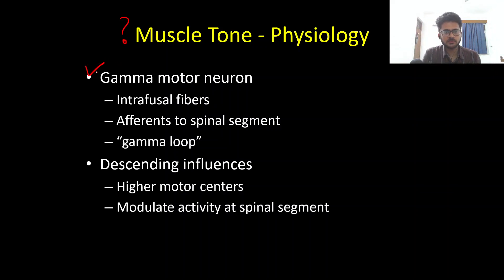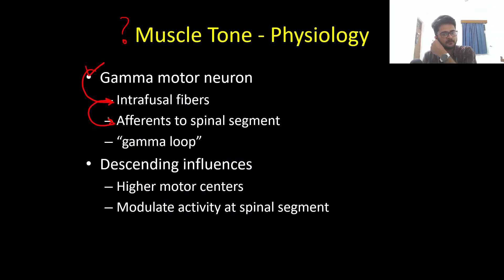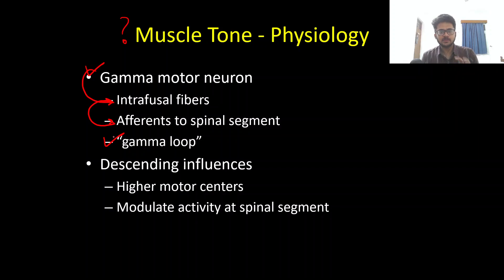What maintains the muscle tone? We have the spinal segment — the gamma loop — where gamma motor neurons supply the intrafusal fibers, and proprioceptive information from these is taken by sensory fibers to the spinal segment. This local loop at the spinal segment level maintains the muscle tone, and this is known as the gamma loop.